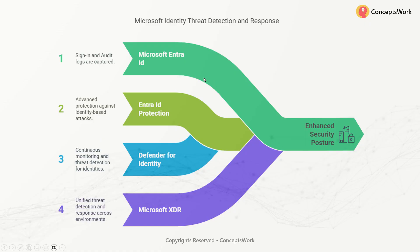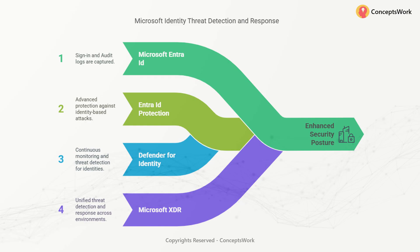For Microsoft Entra ID, sign-in logs and audit logs are captured to detect anything suspicious. From an Entra Identity Protection perspective, it's an advanced protection layer — for example, if a user tries to sign in from Tor Browser and is enrolled in identity protection, that sign-in attempt will be blocked. Defender for Identity continuously monitors everything happening in your on-premises environment across AD CS, AD DS, AD FS, and Entra Connect servers. Correlation then happens in XDR.